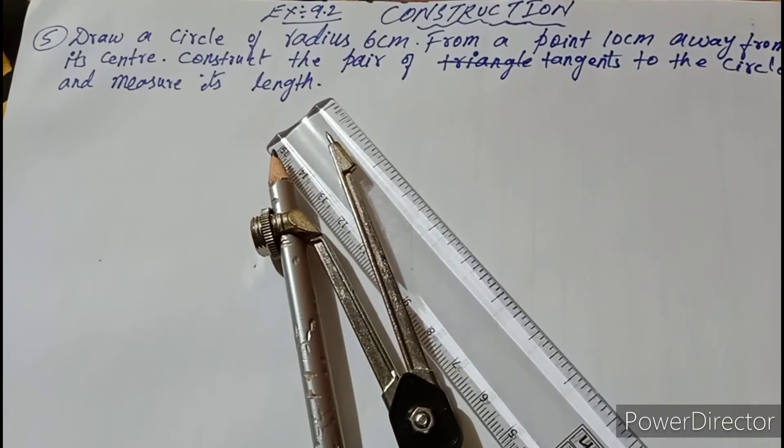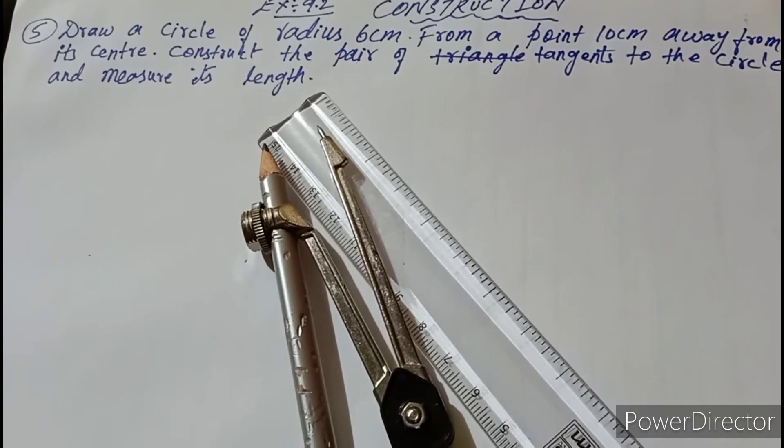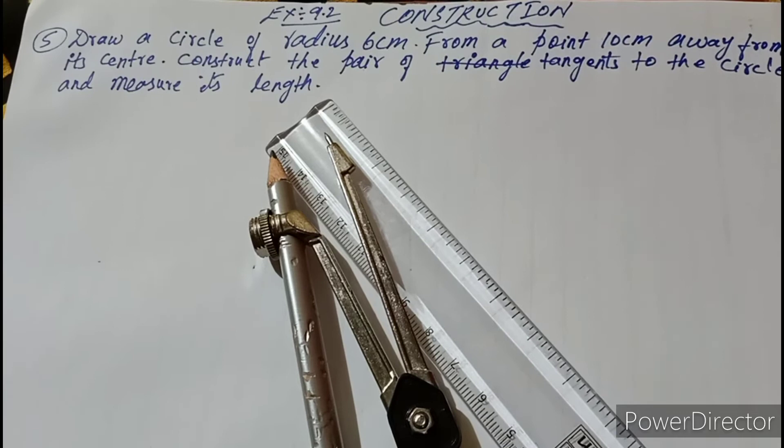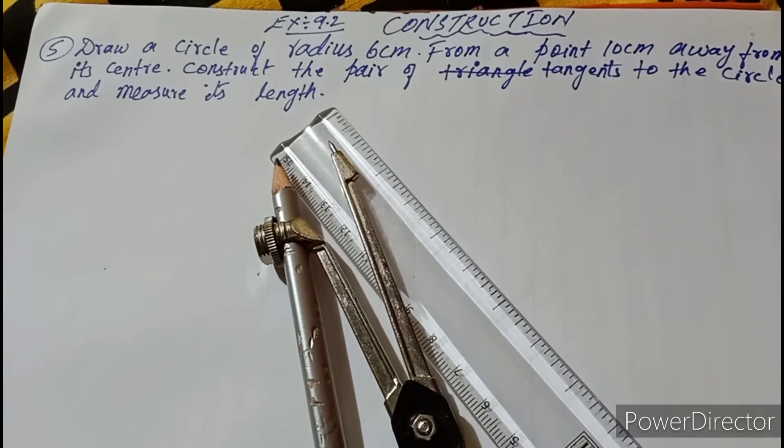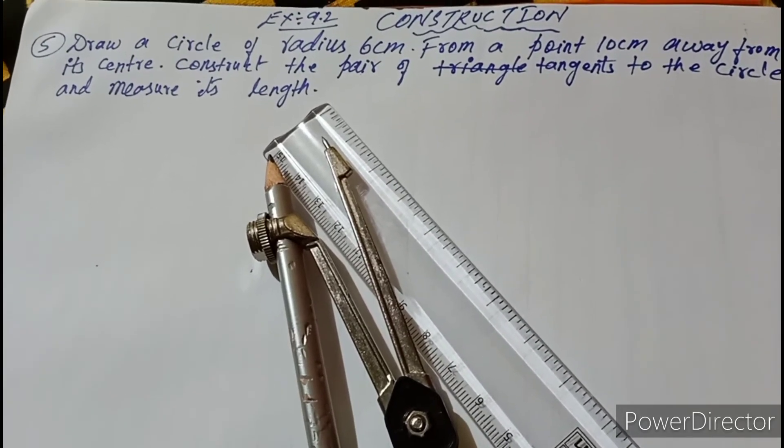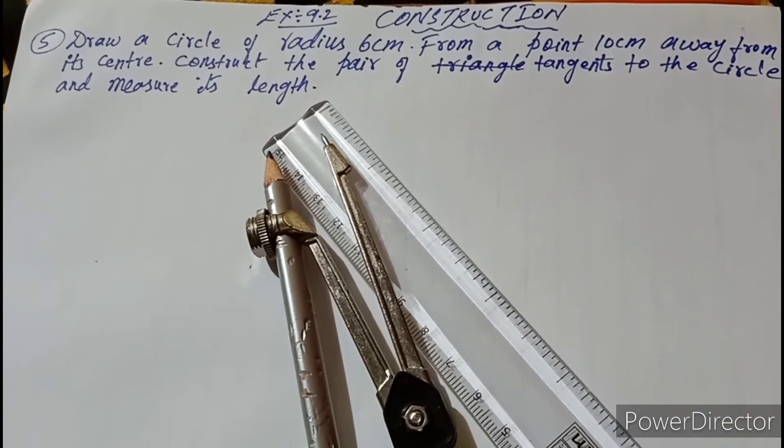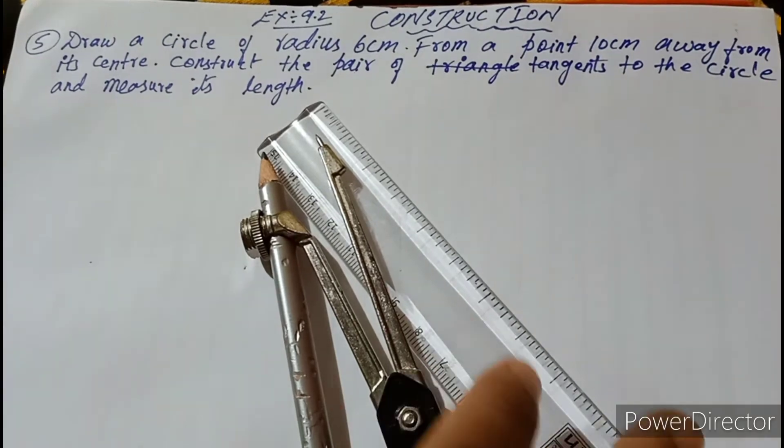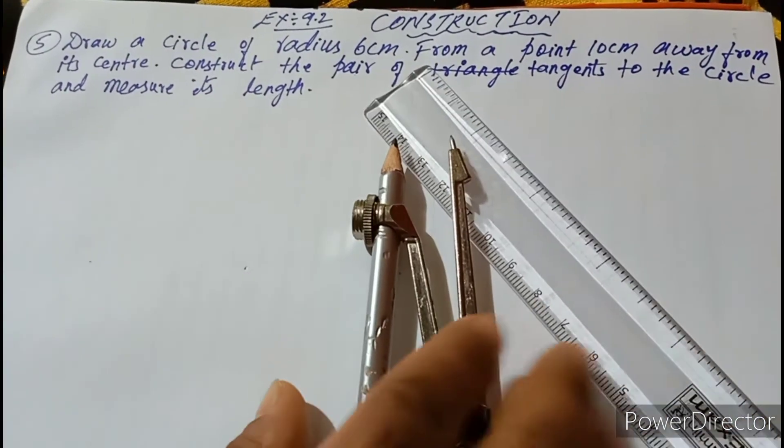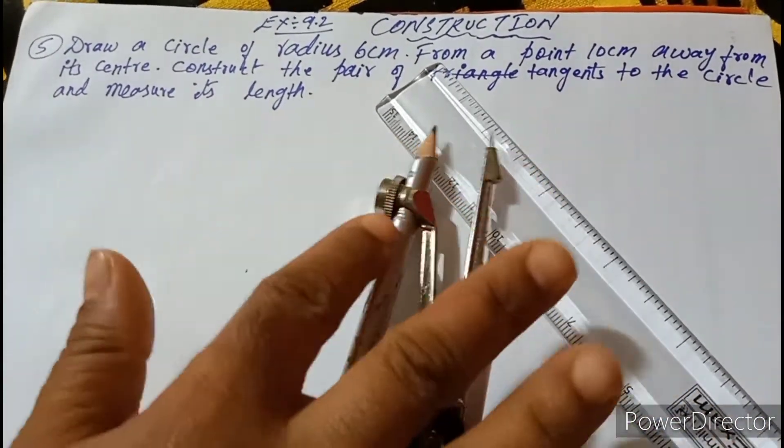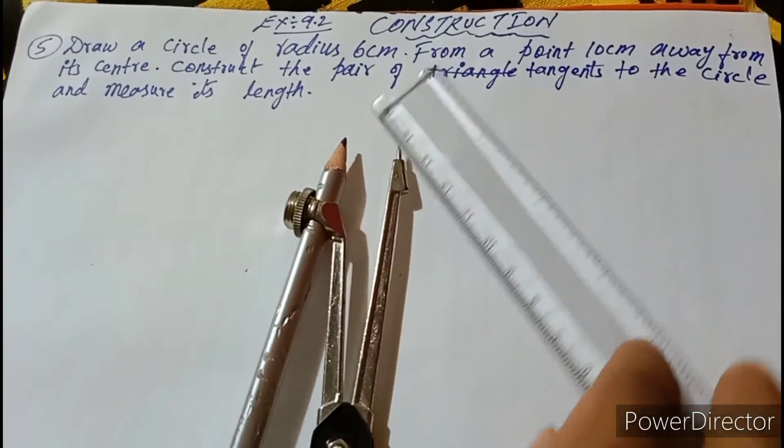Here the question is: draw a circle of radius 6 cm from a point 10 cm away from its center. Construct the pair of tangents to the circle and measure its length. For this problem, we are using a scale and a compass. Only with the help of these two, we are going to construct.